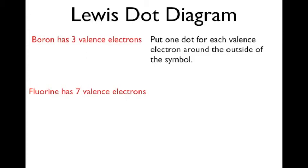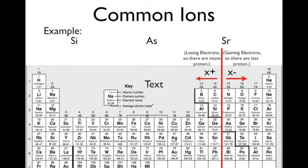The Lewis dot diagram is very simple. You just need to put a dot around the symbol for however many valence electrons it has. So boron has 3 valence electrons, so it just looks like that. Fluorine has 7, so it just looks like that. What I have is I have put a line between my carbon and my nitrogen, and on the left side I have an X plus, and on the right side I have an X minus or negative.